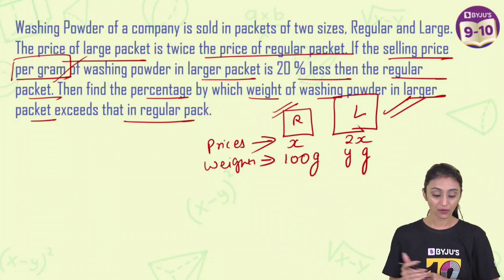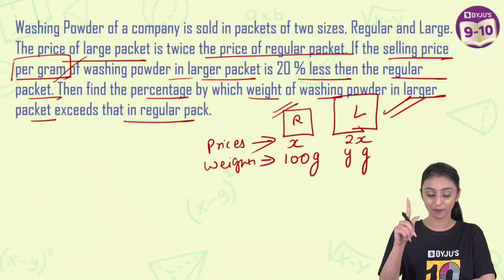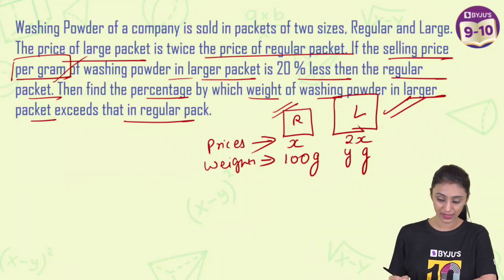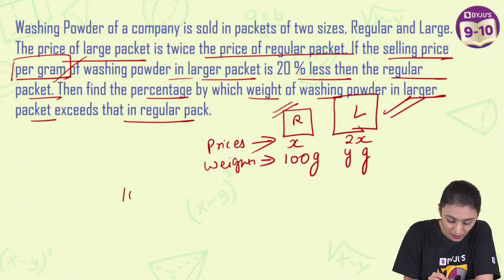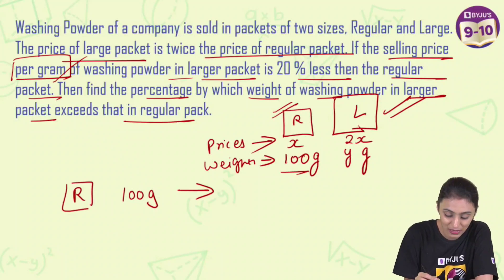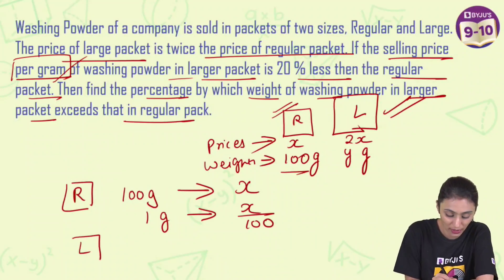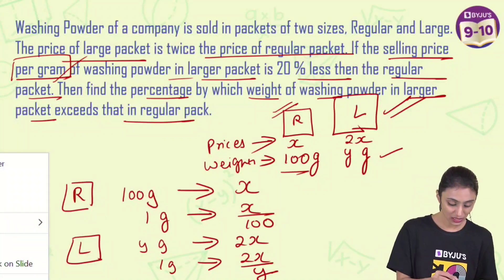It says the selling price per gram of the larger one is 20 percent less than the regular one. So if the regular is 100, the larger one is sold at 80. For the regular packet: 100 grams costs x, so 1 gram costs x/100. For the larger packet: y grams costs 2x, so 1 gram costs 2x/y.